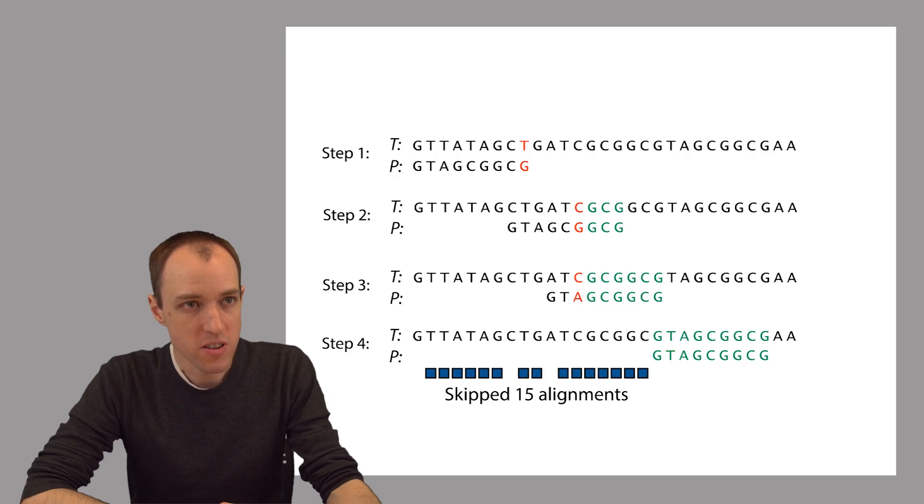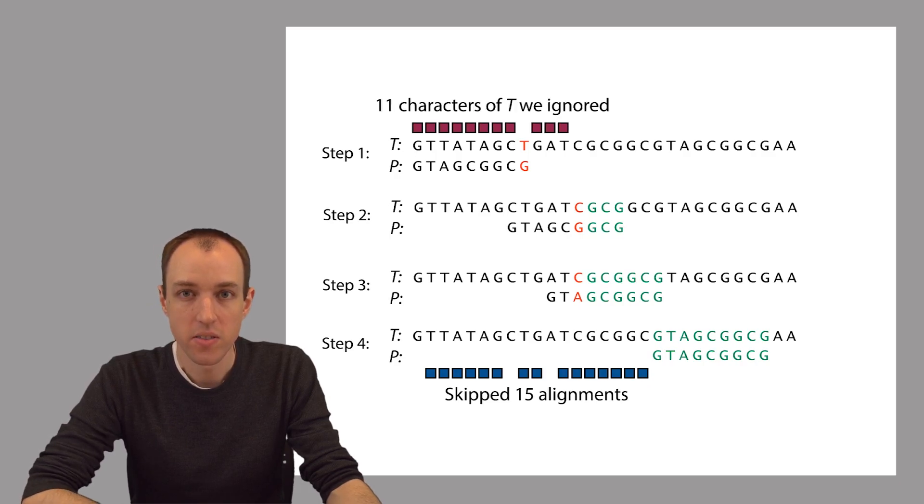So furthermore, there were several characters in the text, these characters highlighted up here, that we completely ignored. They were never involved in any character comparisons that we did. This explains Boyer-Moore's advantage over naive exact matching.